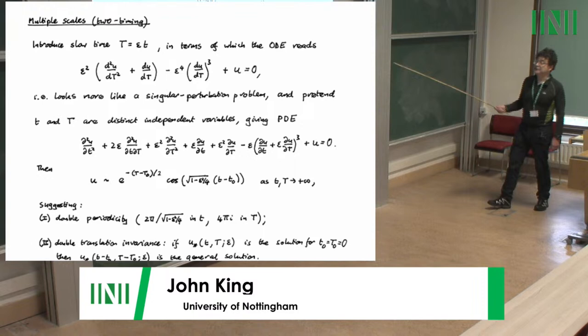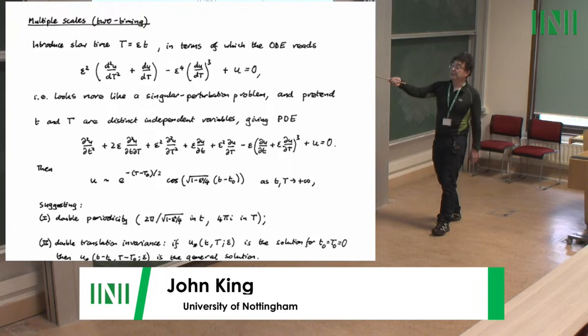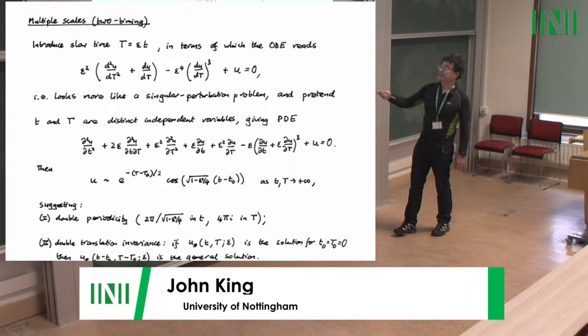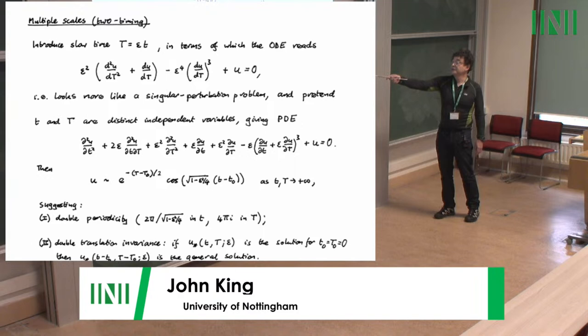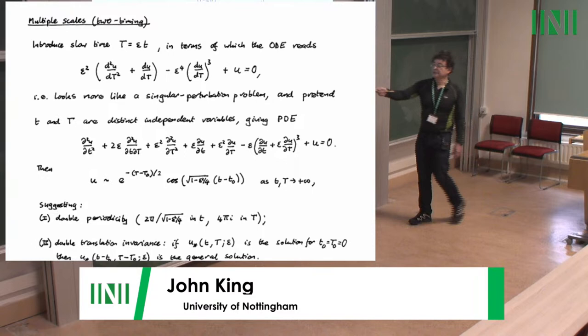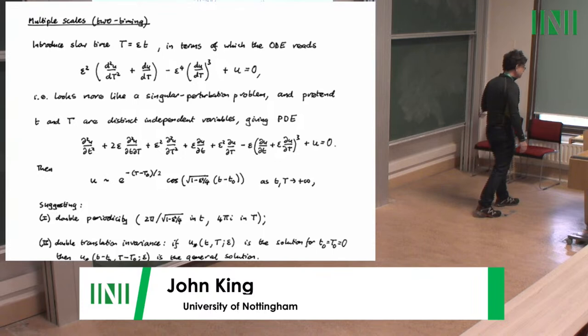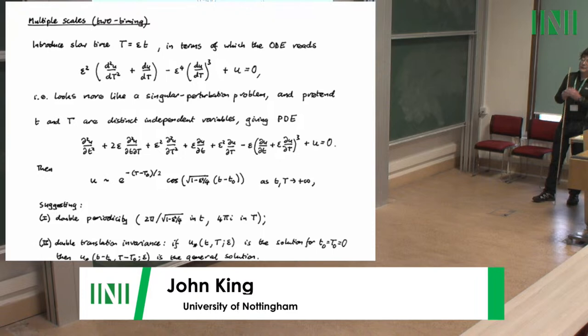If the two time variables were truly independent, that would imply two things that essentially can't be true. First, you'd have double periodicity — a period in little t and an imaginary period in big T from the exponential. Second, you'd be able to write the general solution in terms of one specific solution by shifting both time variables — which clearly can't be true, because there's really only one time translation invariance in the ODE.